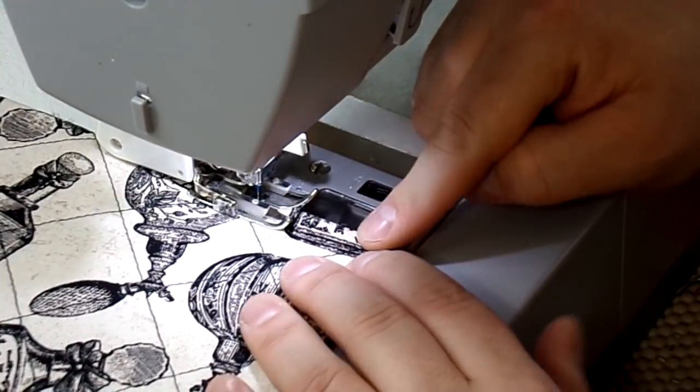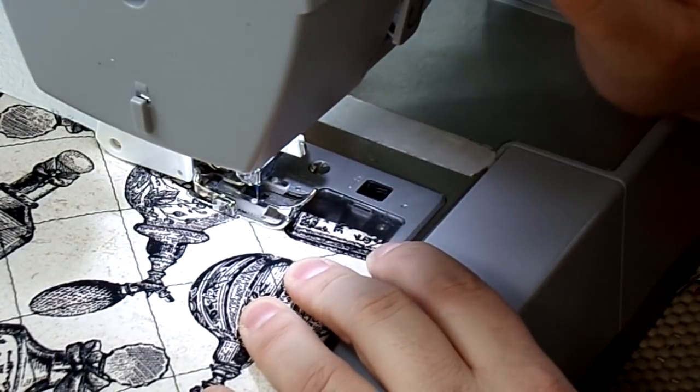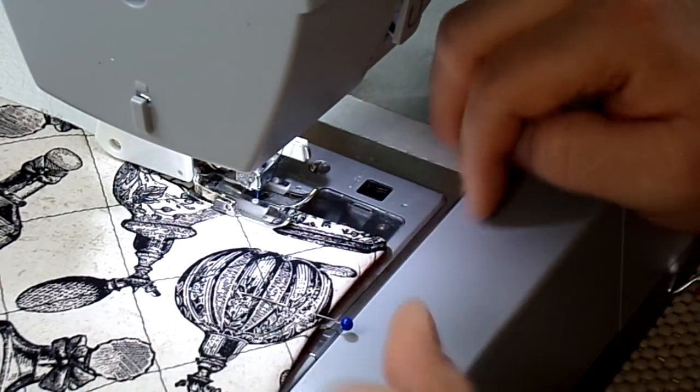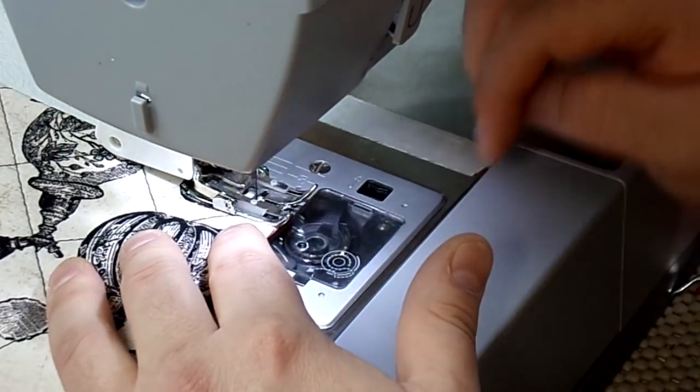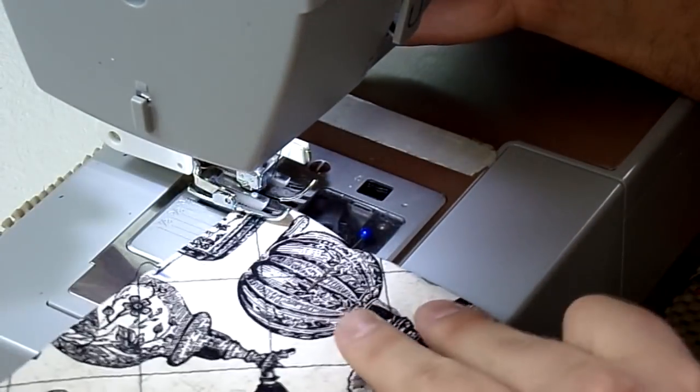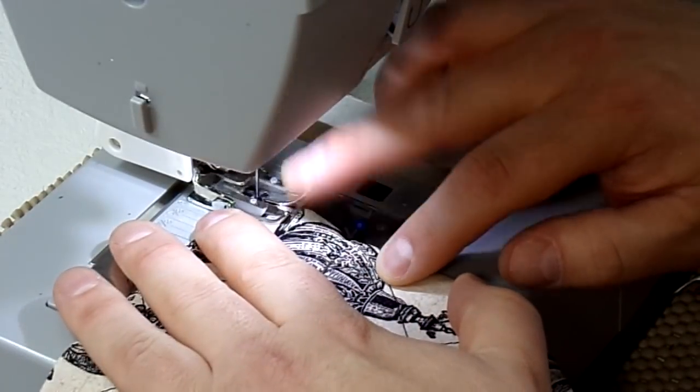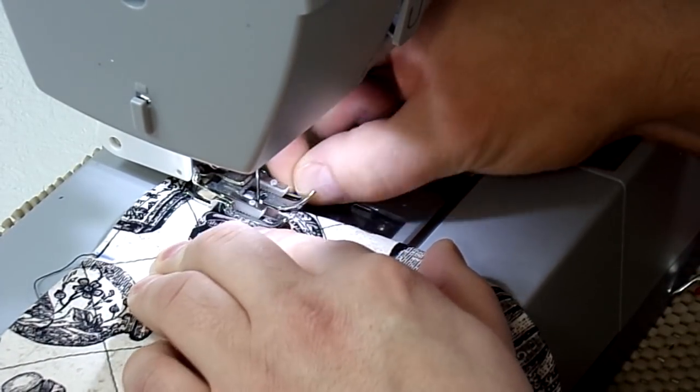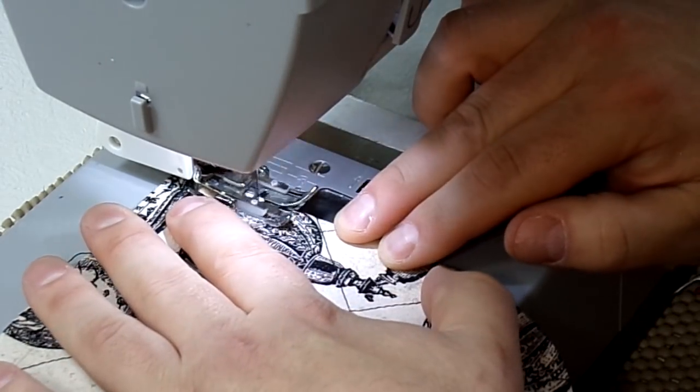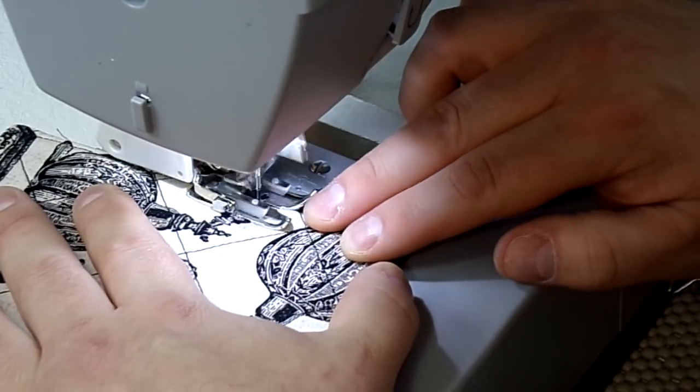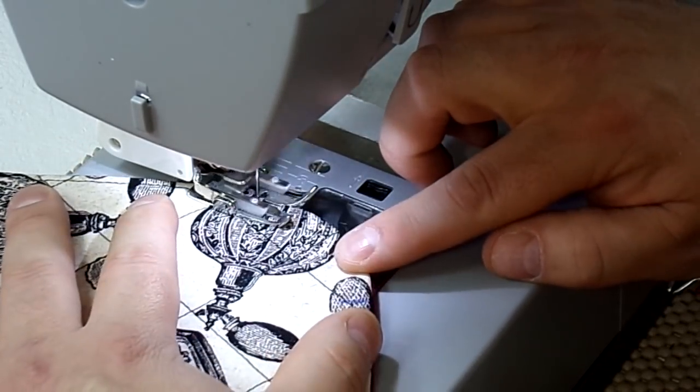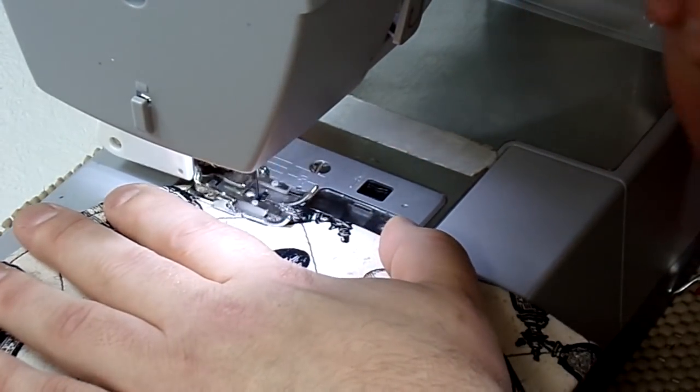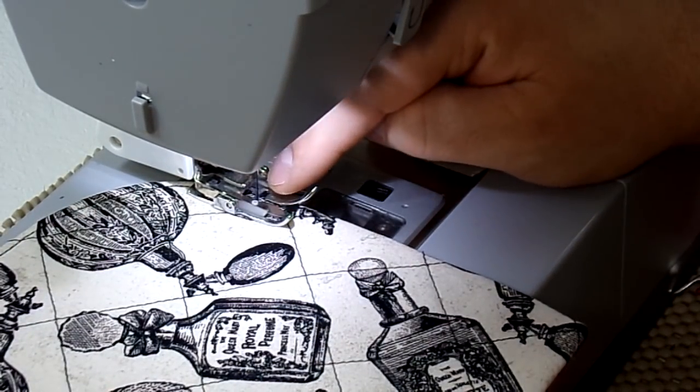So I have my needle right on my pin mark. I'm an eighth of an inch away from the side. I'm going to backstitch. And just keep sewing. And don't forget to backstitch at your second pin mark.